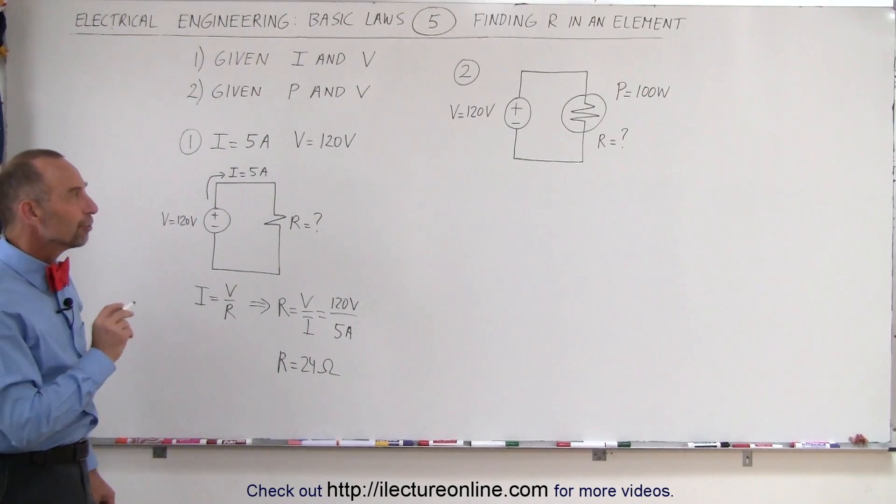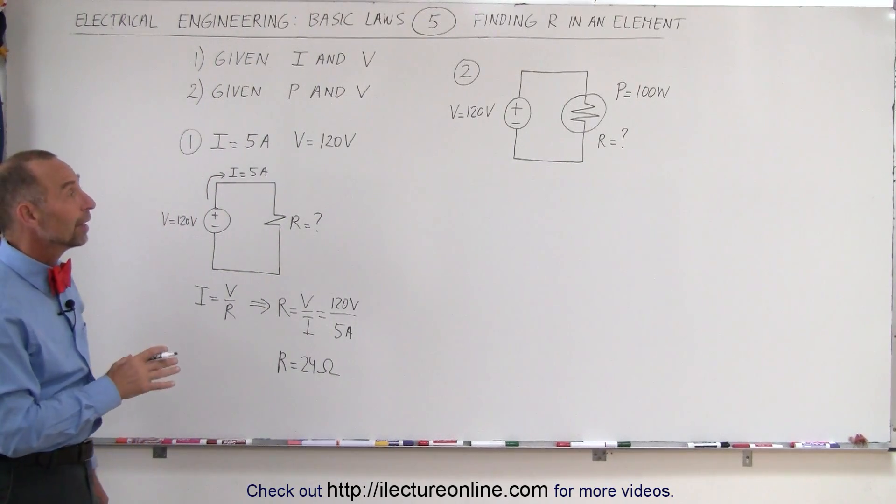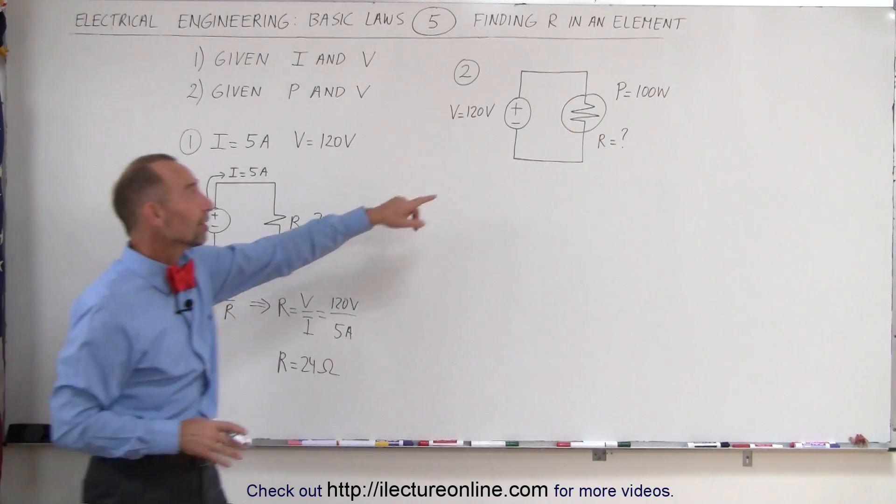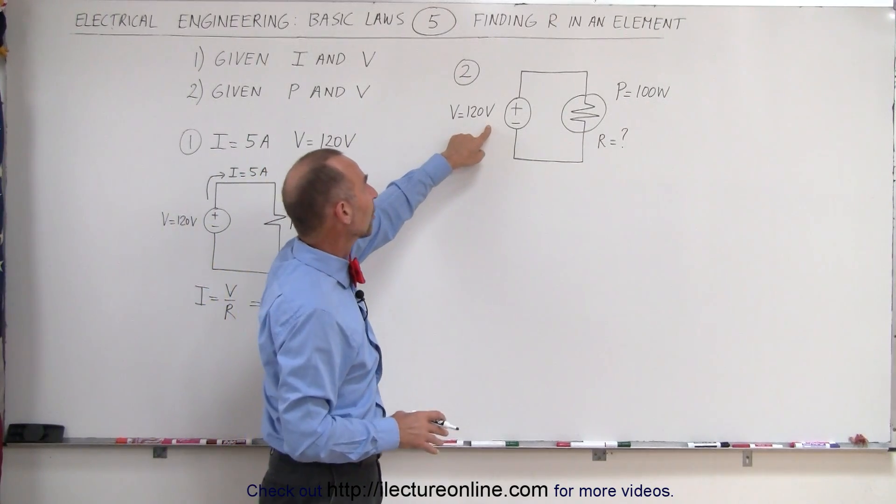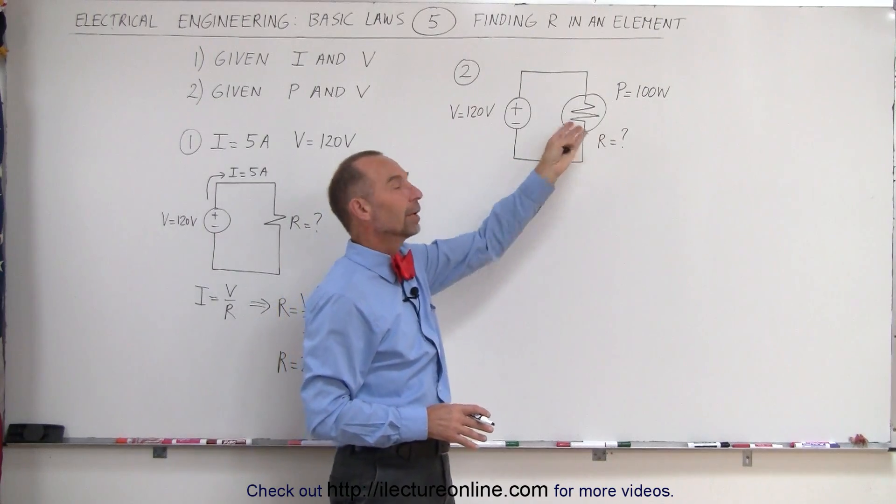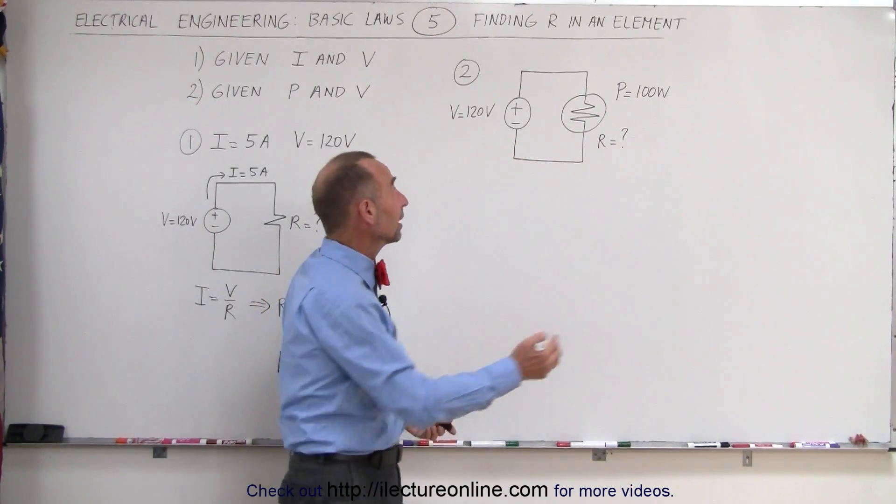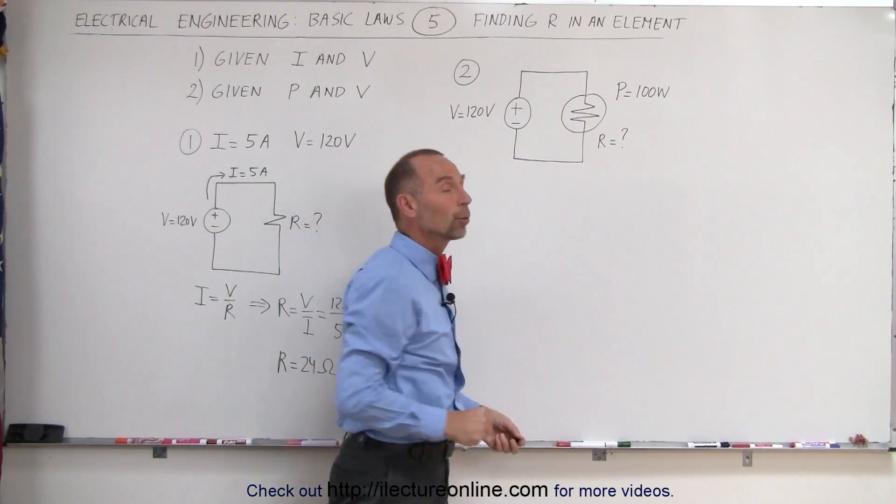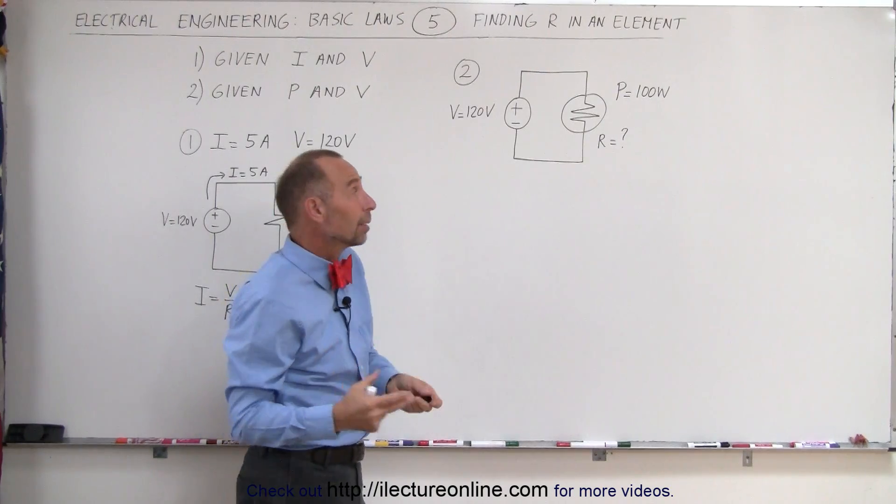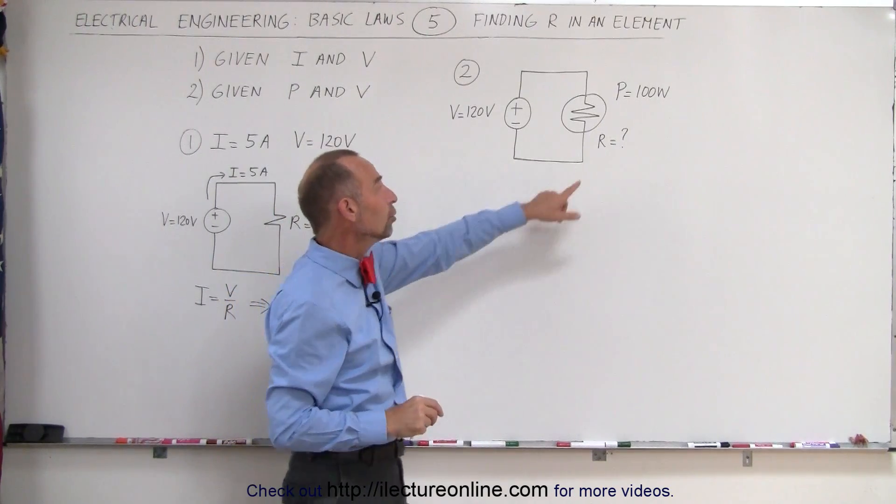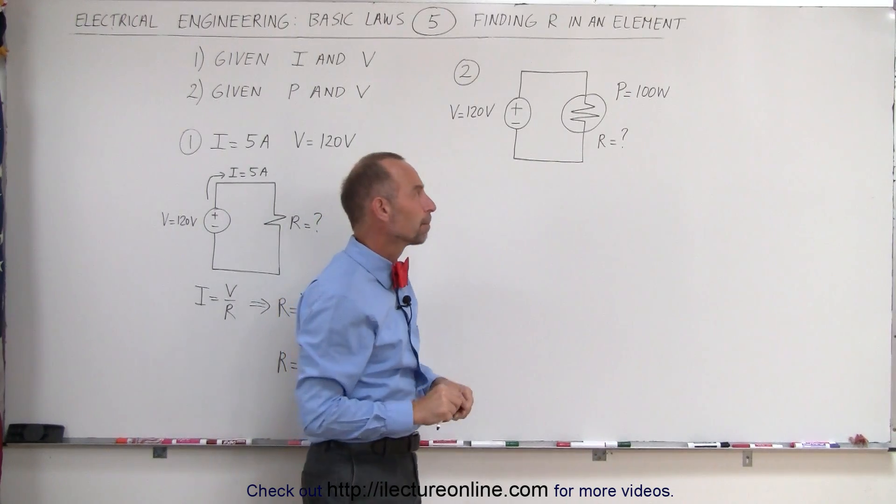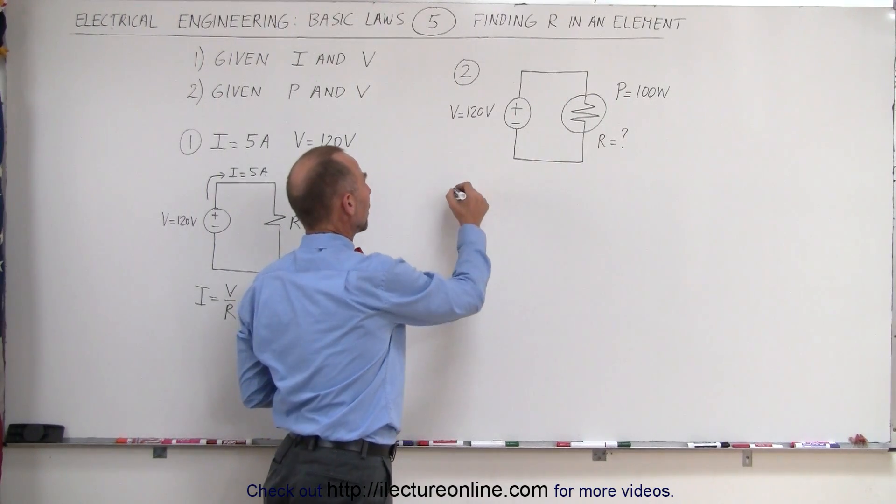A little bit more confusing is when they give you the power and the voltage, like in case number two. Here we have a different circuit, the voltage is 120 volts, and we have a light bulb that's connected to the circuit. The light bulb requires 100 watts to operate properly, and we want to know the resistance of that light bulb. For that, we need to use the power equation.